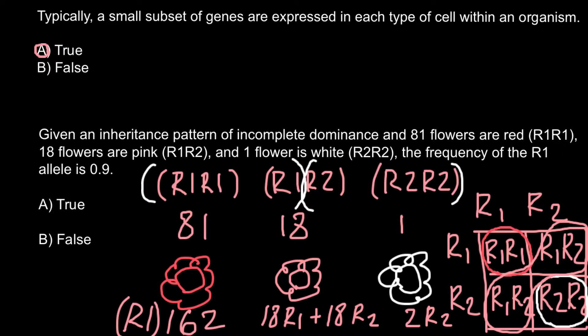We add these numbers: combine 162 with 18. The 18 R2 alleles we combine with two R2 alleles from the R2R2 genotype. So we have 180 R1 alleles total.